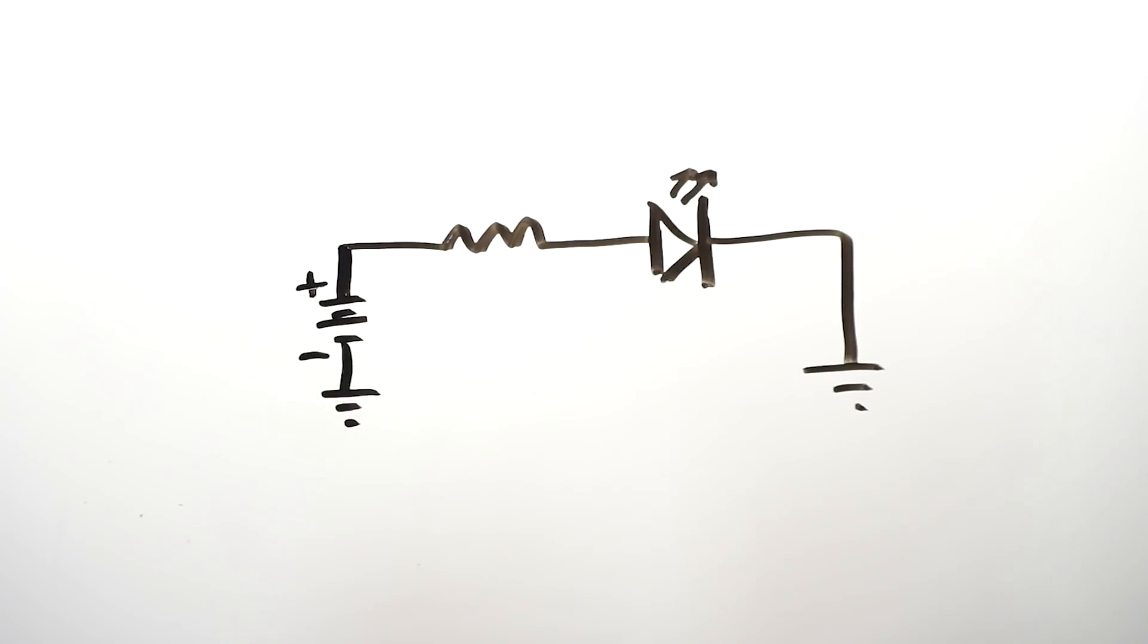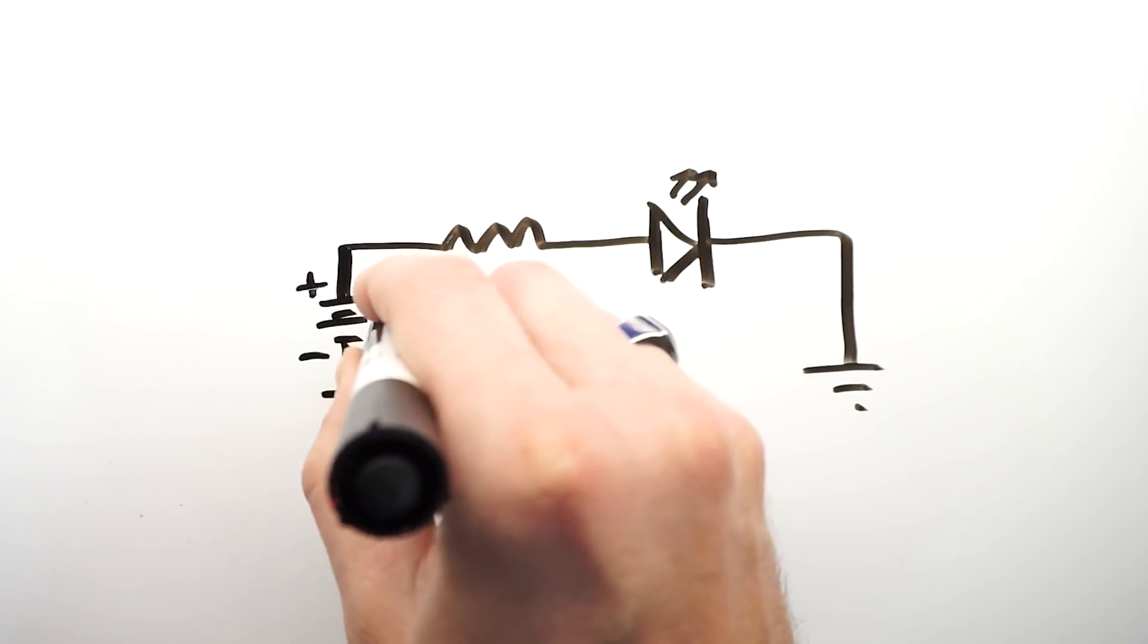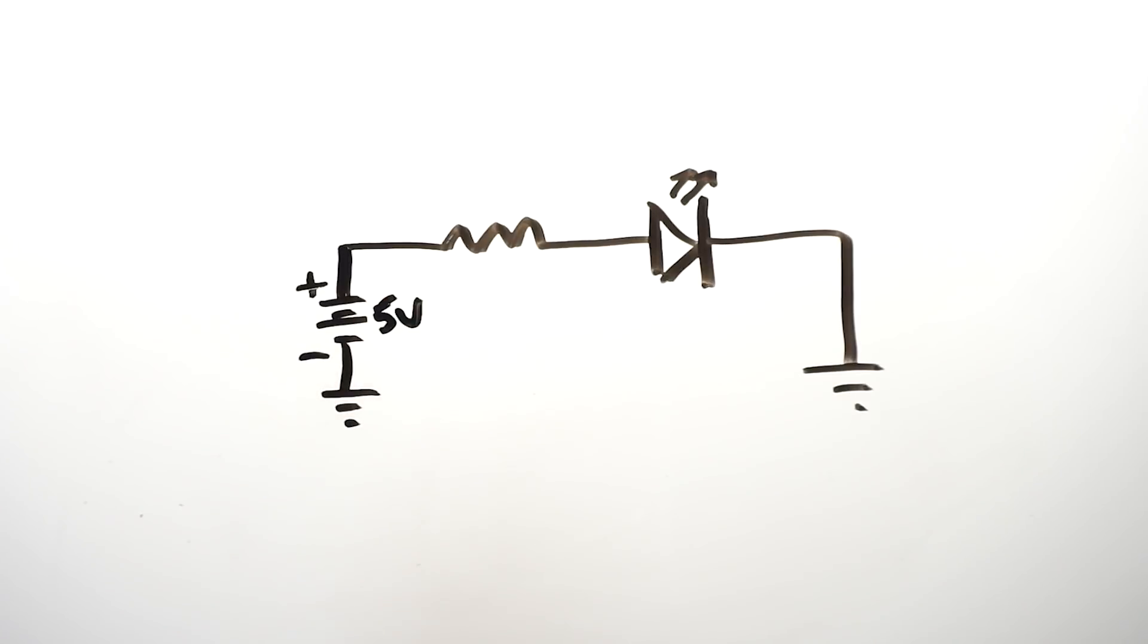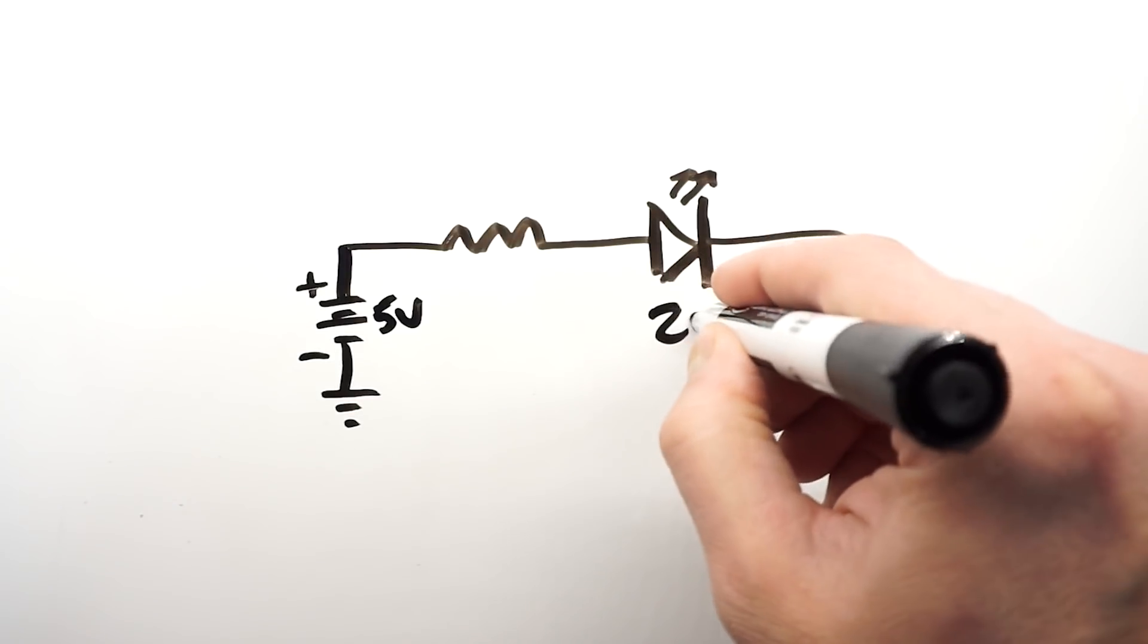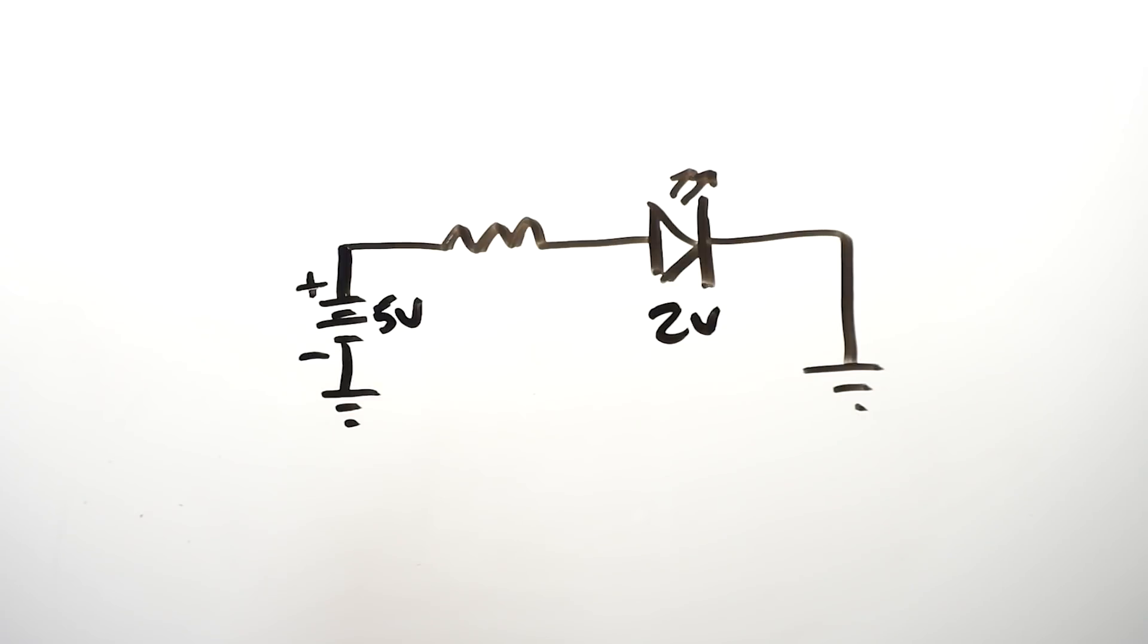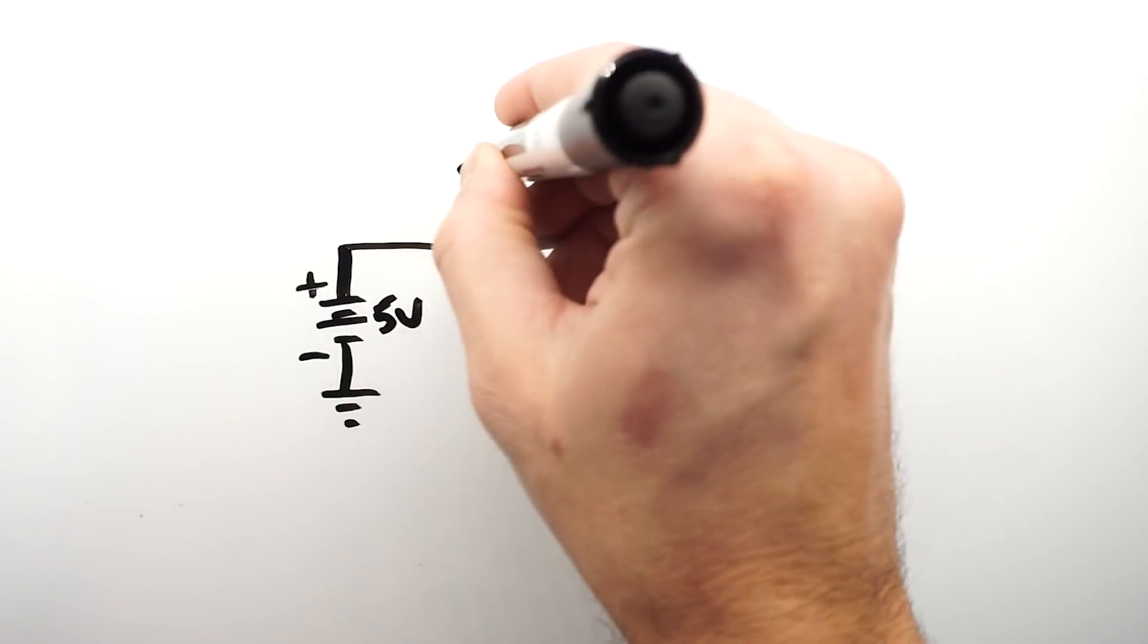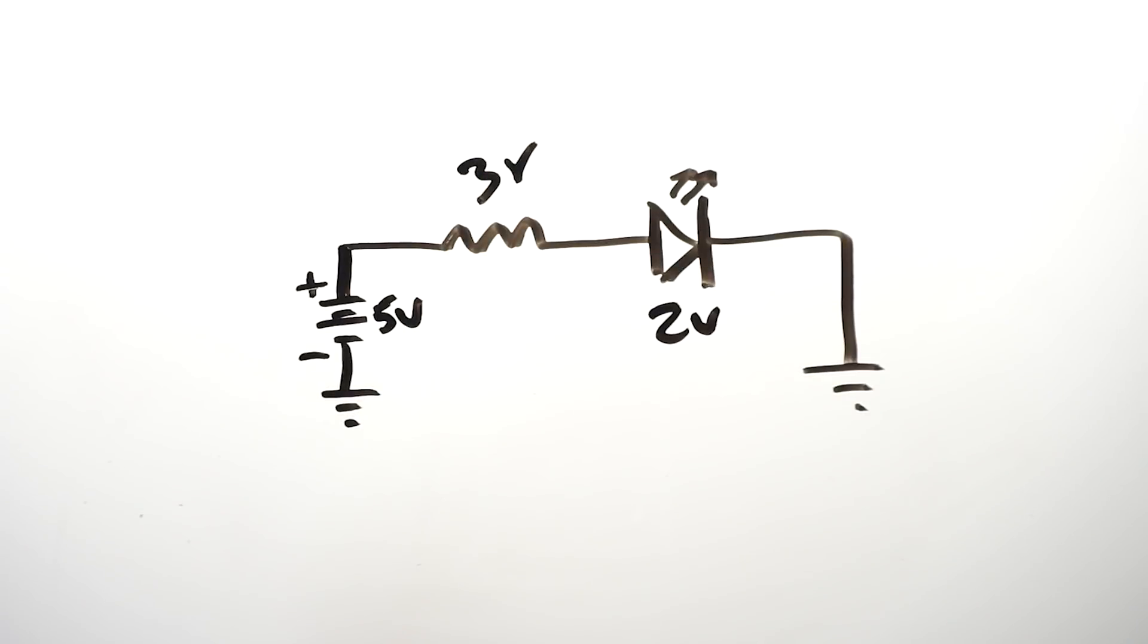Now, how do we select a resistor to current limit our LED so that it sees 20 milliamps? Let's assume that the voltage supplied to our LED circuit is five volts. Maybe it's coming from a microcontroller pin. Our LED consumes two volts, as we saw from the forward voltage parameter of the data sheet. That means that the remaining voltage appears across the series current limiting resistors. So we're left with three volts across the resistor.